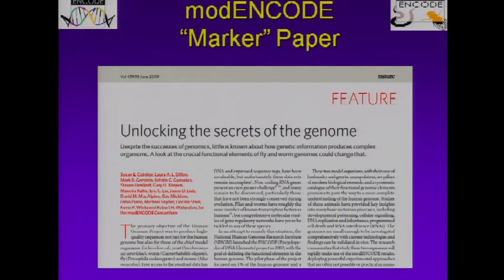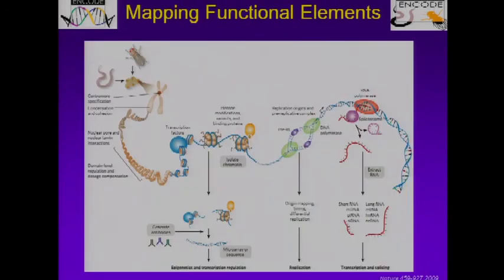The MODENCODE group has also done a number of publications. The group published what we call a marker paper back in 2009, to inform the community about the plans for the MODENCODE consortium — what types of data there were, how to access the data, and what the community could anticipate. I'll just highlight some of the features: this includes data on transcription factor binding sites, histone modifications, origins of DNA replication, as well as extensive analysis of transcription. It's just a little preview of what you're going to hear about later.